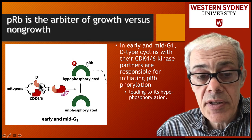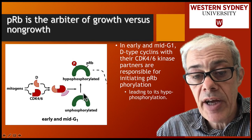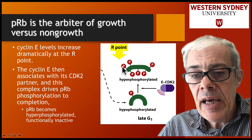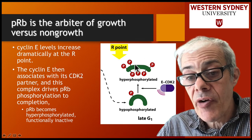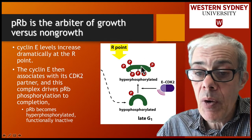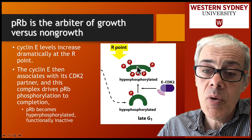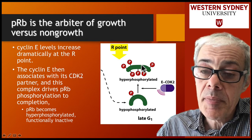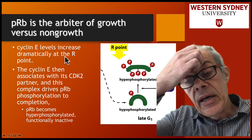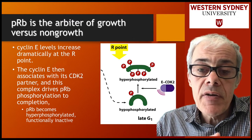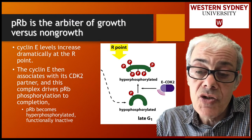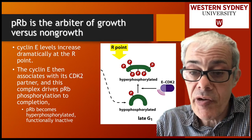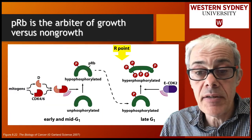You get more cyclin-CDK complex, you get more phosphorylation. As retinoblastoma becomes progressively phosphorylated and then hyperphosphorylated, this protein is no longer active. So what is retinoblastoma doing? We know that its phosphorylation status is controlled by cyclin-dependent kinases, and it becomes hyperphosphorylated and inactivated — but what is it stopping?